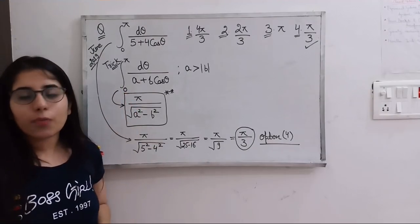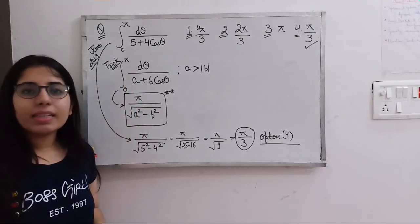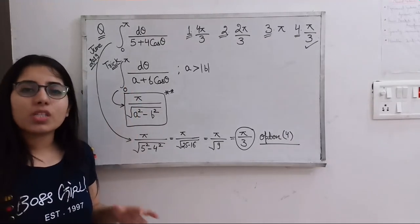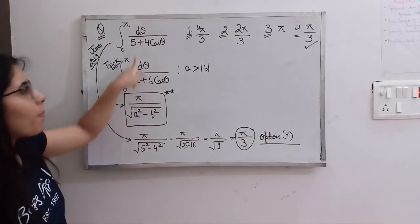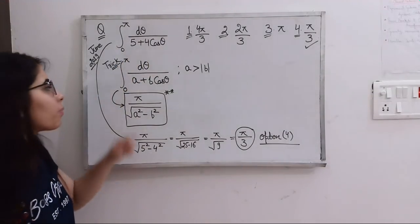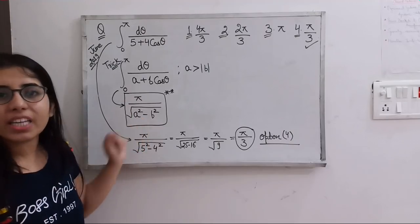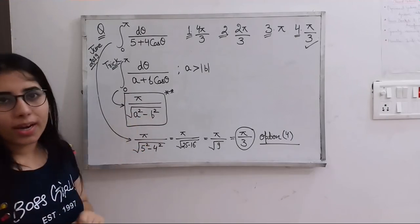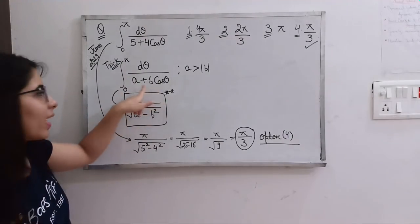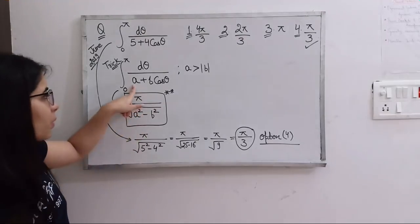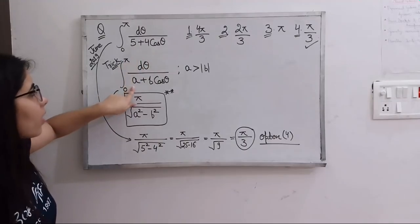Now, what is the final expression we get when solving such kind of question? As you can see, the given question is in the same form. The answer you will get is π upon √(a² − b²), where b is the term which is with cosθ and a is the standalone term.